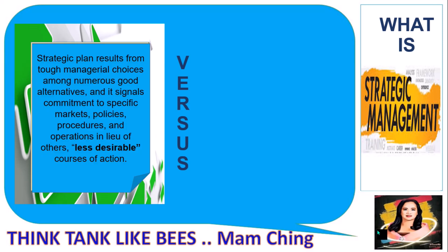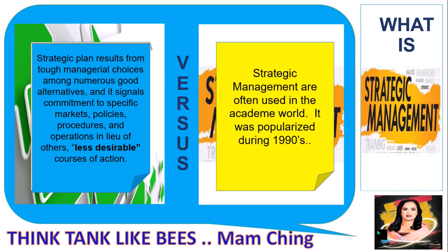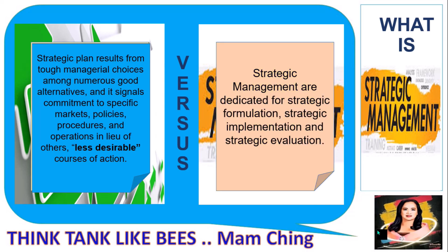A strategic plan results from top managerial choices among numerous good alternatives, and it signals commitment to specific market policies, procedures, and operations, among other less desirable courses of action. Strategic management, on the other hand, is often used in the academic world and was popularized during the 1990s.